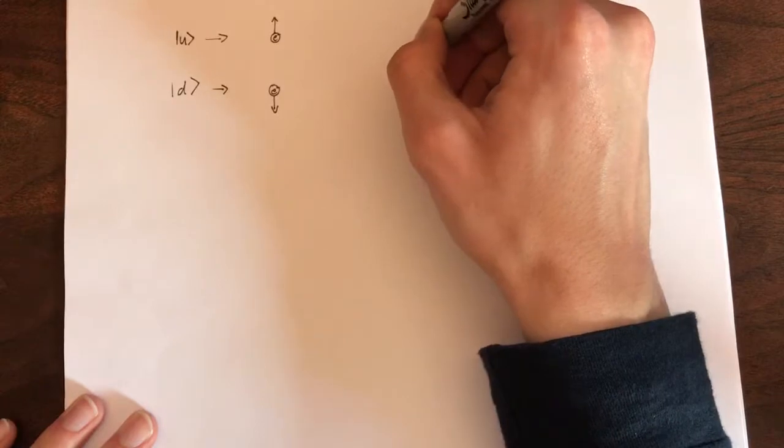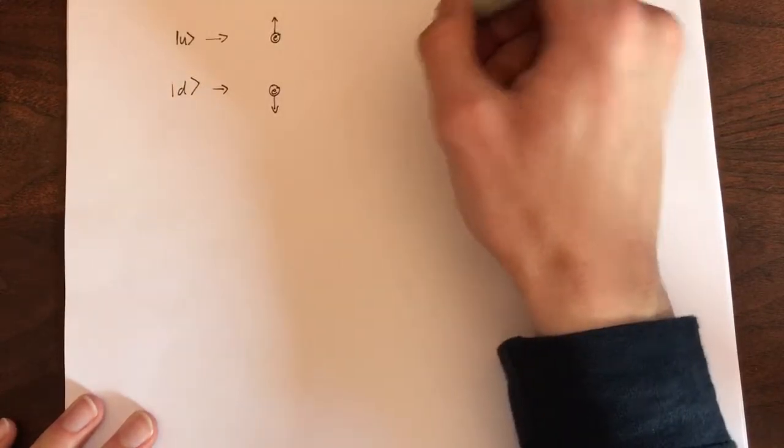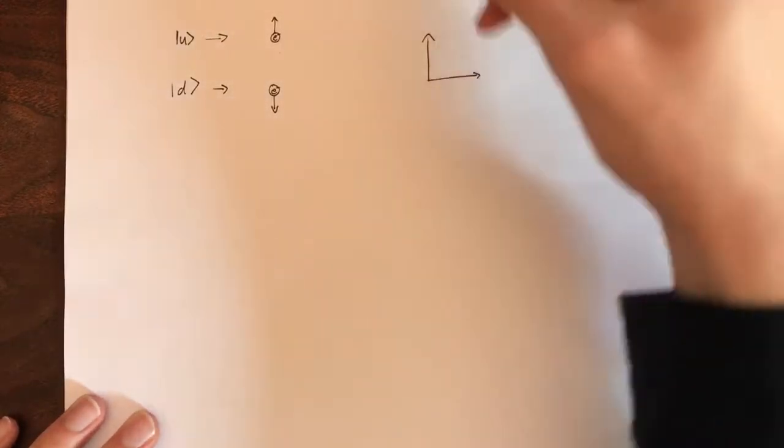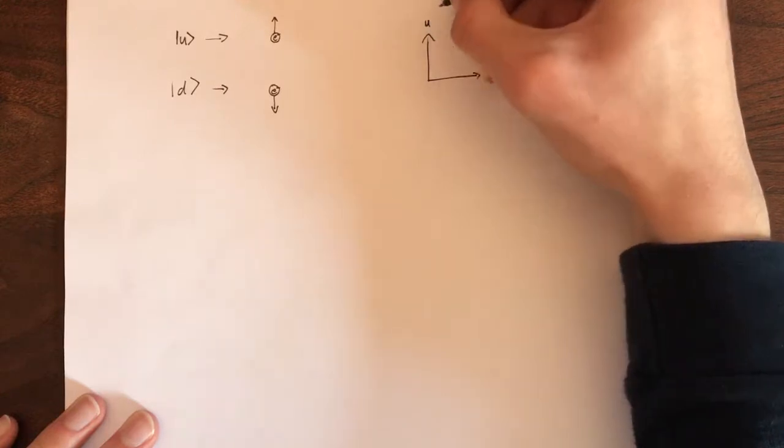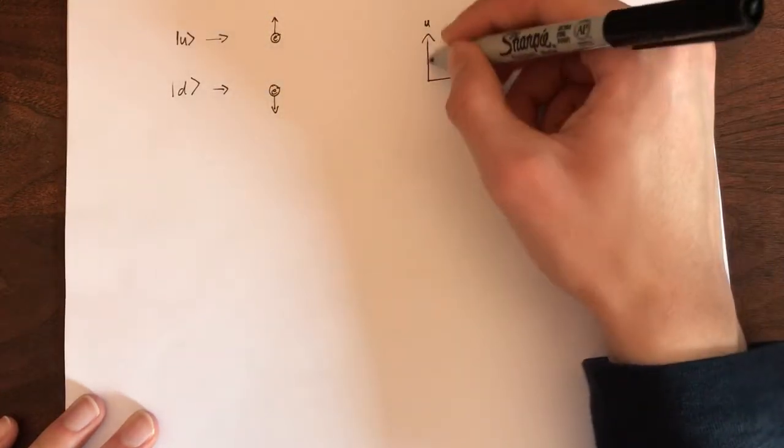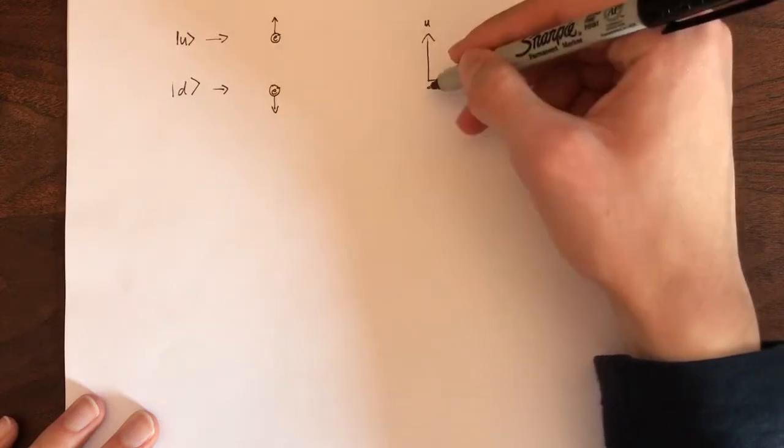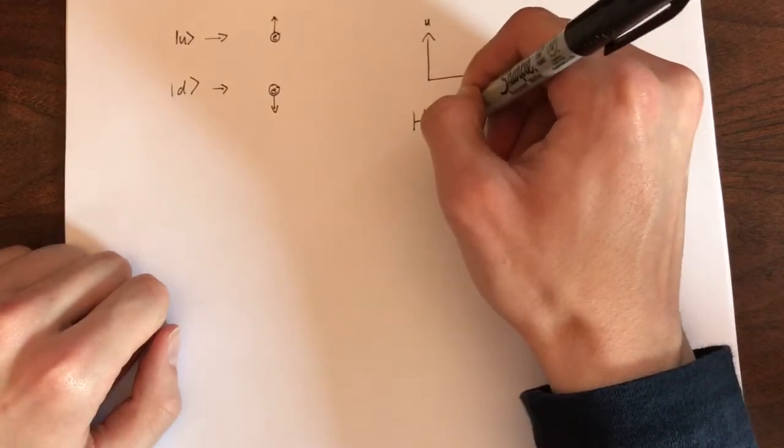Which looks like this, if we tried to draw it. Even though we're using complex numbers on these axes, this would represent the up axis, and this would be the down axis. That's kind of confusing because they're only perpendicular and not opposite each other. But this is a Hilbert space. It's not actual three-dimensional space.